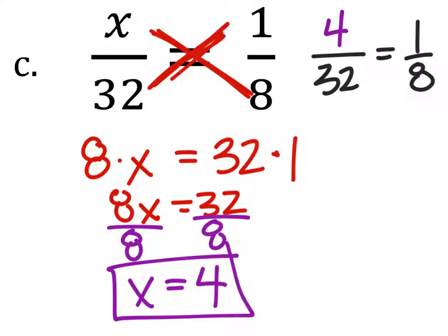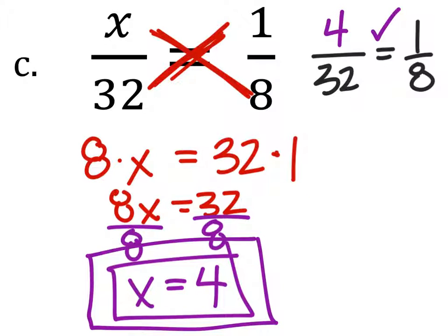4 divided by 32 would be the same as 1/8. So this checks out, and we can know for sure that on a test our answer is correct.